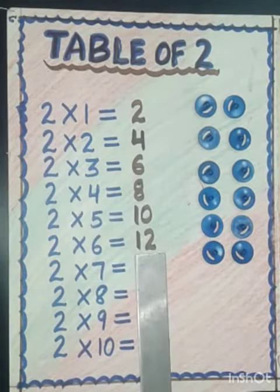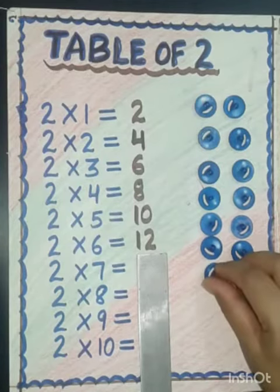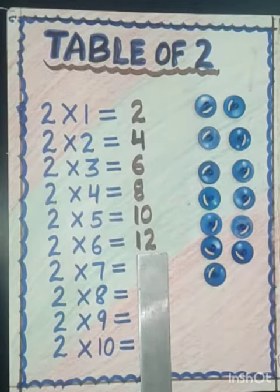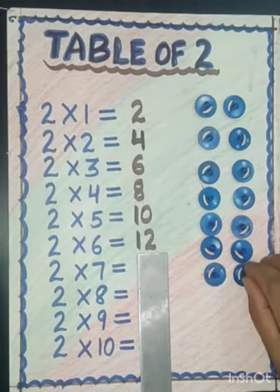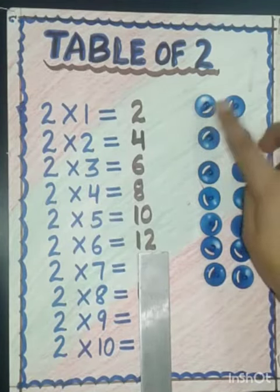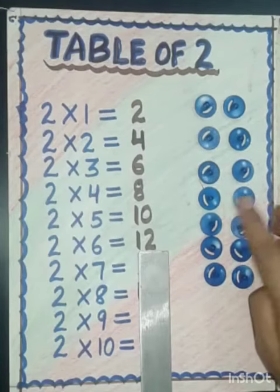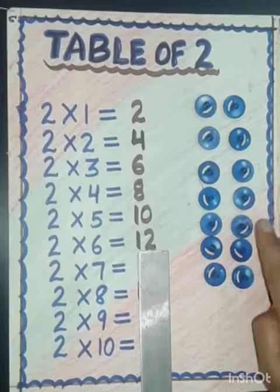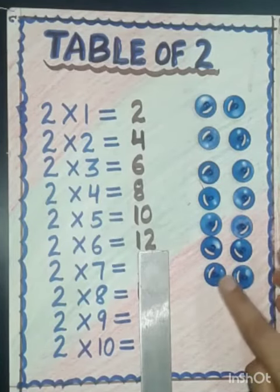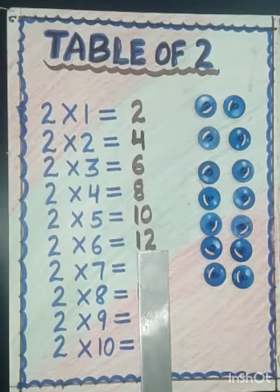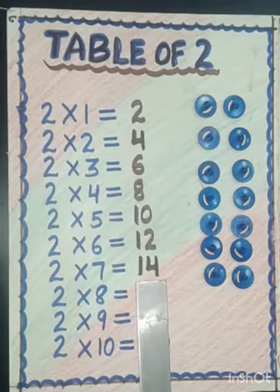Two sevens are — again we will add two more. Let's count: 1, 2, 3, 4, 5, 6, 7, 8, 9, 10, 11, 12, 13, 14. Two sevens are 14.